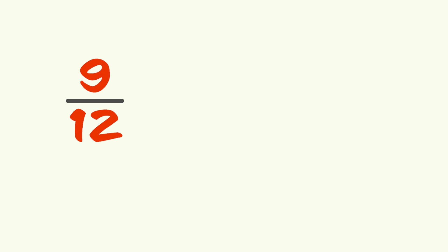Let's try. Both top and bottom numbers need to be divided by 3. We divide 9 with 3, it gives us 3. We divide 12 with 3, it gives us 4. So, it gives us three-quarters, or 3 out of 4.